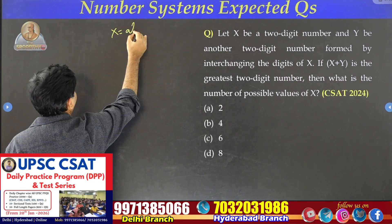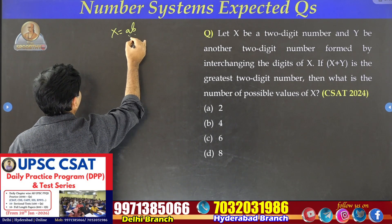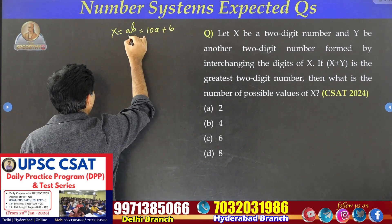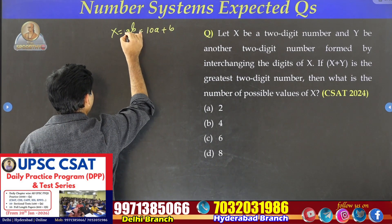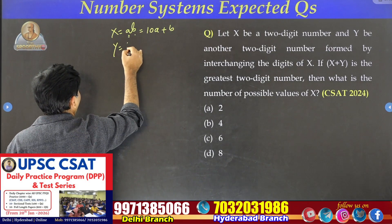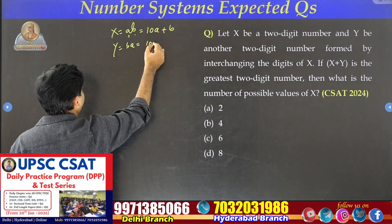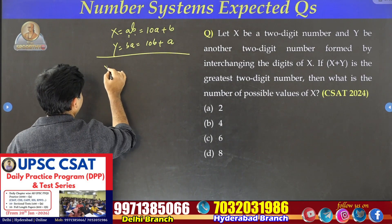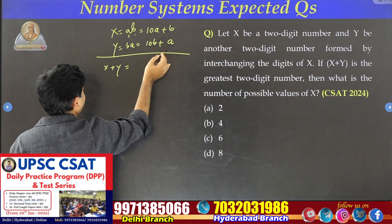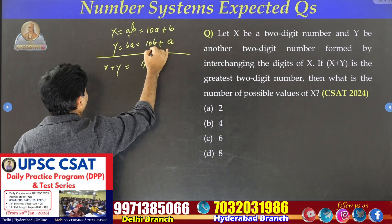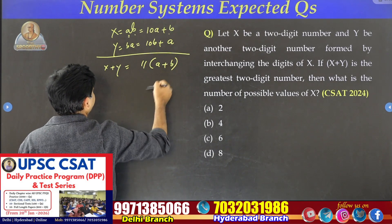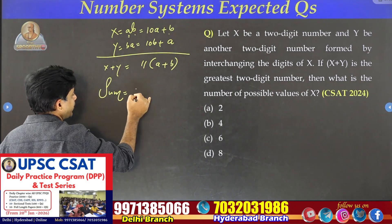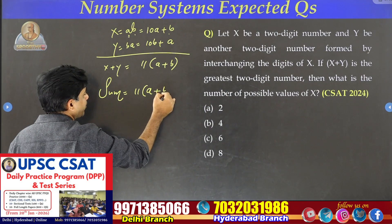Let us say x equals ab — two digits. Its value will be 10a plus b, because a is located at the tens place: 10a plus b. y is ba, so 10b plus a. Now the sum: 10a plus a is 11a, b plus 10b is 11b, and 11 is common.